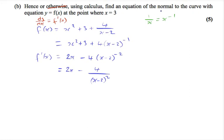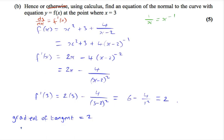To find the gradient of the normal, we first need to find the gradient of the tangent. And we can find the gradient of the tangent by subbing x equals 3 into this, the derivative. Simplifying this gives us 6 minus 4 over 1 squared, which equals 2. So gradient of tangent equals 2. Therefore, the gradient of the normal equals minus a half. This is because the tangent and normal are perpendicular, so the gradients will multiply to give minus 1.